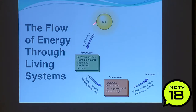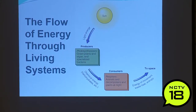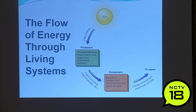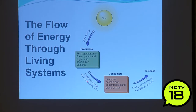Here's the flow of energy through living systems: light energy goes to producers — photosynthesizers, algae, green plants, and specialized bacteria. From there, chemical energy is stored as carbohydrates. Then consumers — that's us — respirers, animals, and decomposers. Plants at night give off CO2. Energy also moves in the form of heat and waste to space.